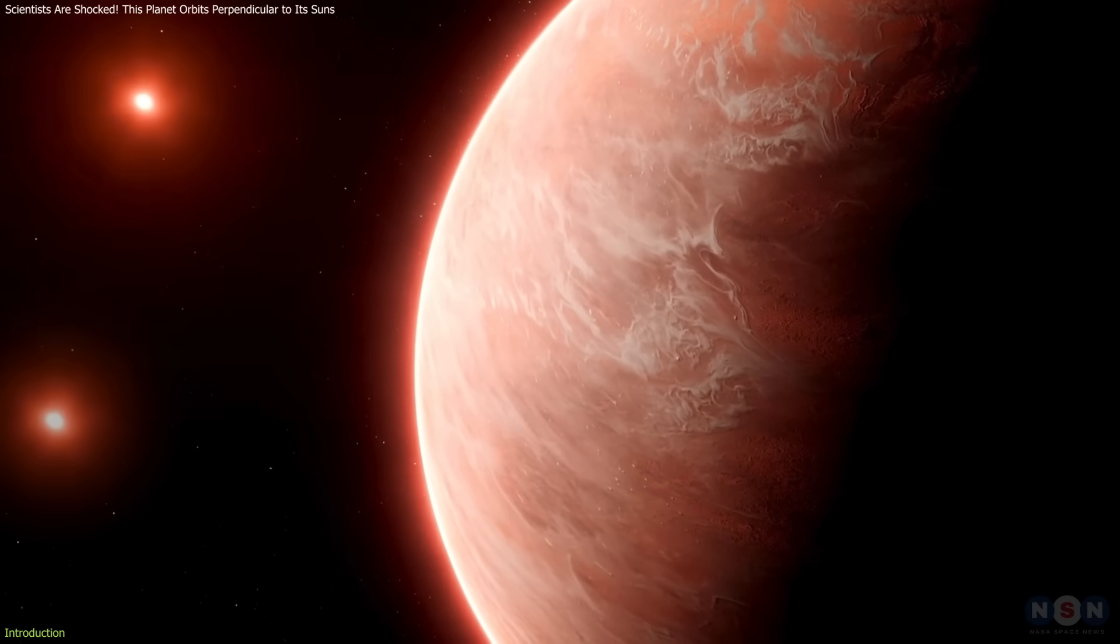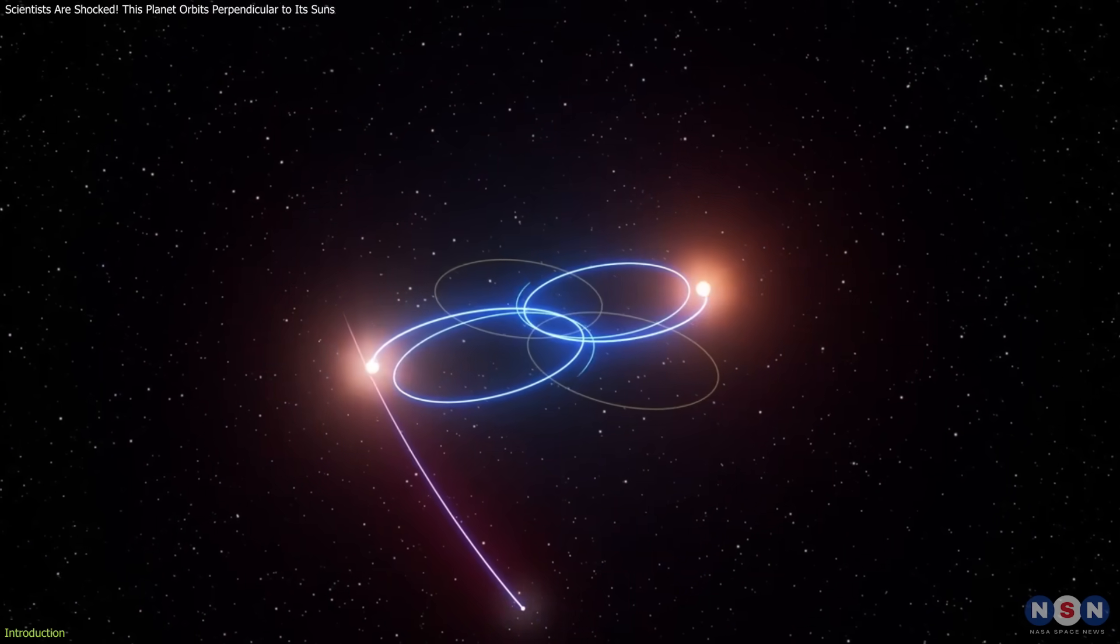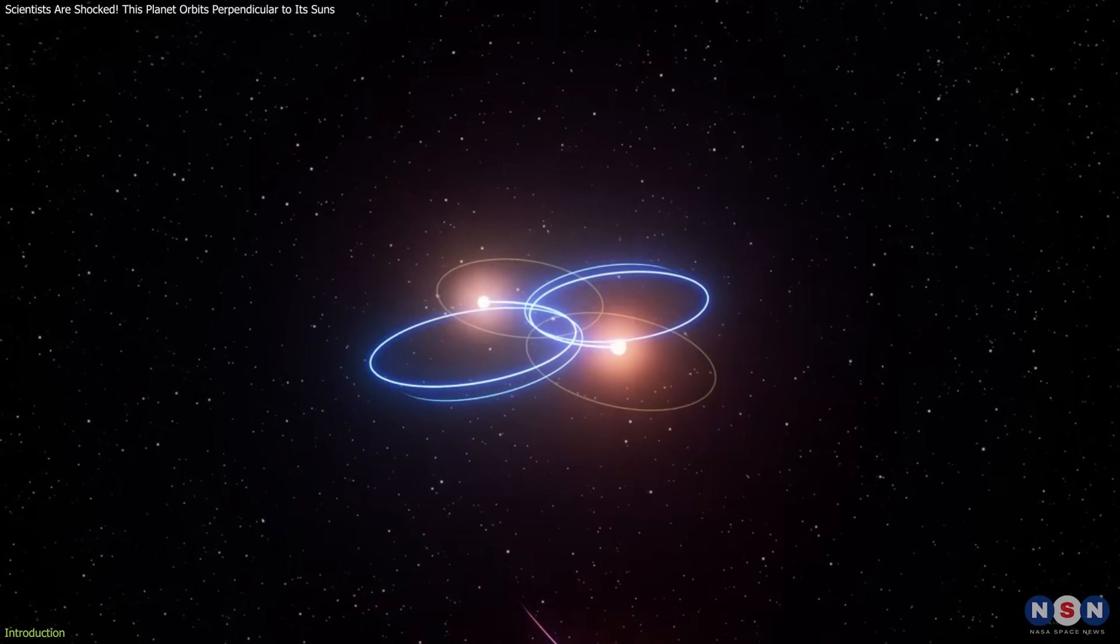Astronomers have recently discovered something genuinely astonishing, a planet that orbits perpendicularly, at a 90-degree angle, around two stars.